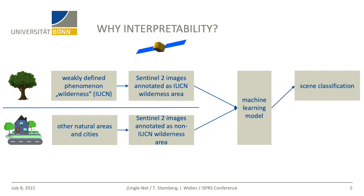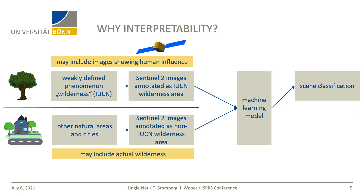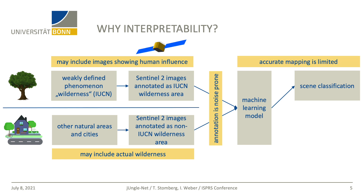But since we only have weak labels, there are some problems with this simple workflow. Our IUCN-wilderness samples may include some images which show human activities. And on the other hand, we cannot rule out that there are some actual wilderness samples in our non-IUCN-wilderness dataset. So our annotation is noise-prone, and therefore the accuracy of our mapping is limited. That's why our machine learning model must also provide interpretable information. With an interpretable machine learning model, we do not analyze the classification results themselves — in fact, we analyze how the model makes its decisions.